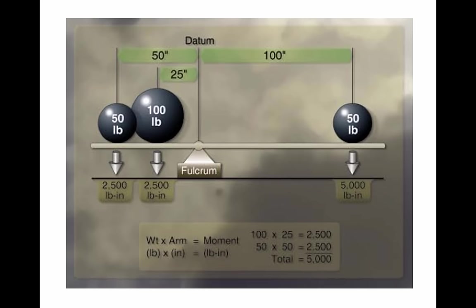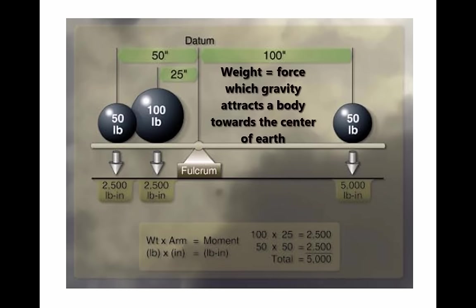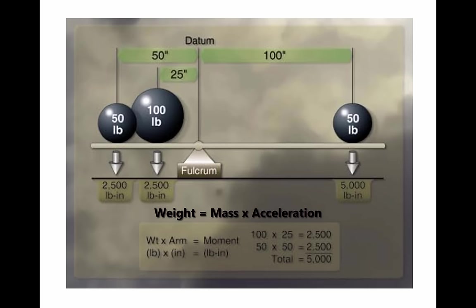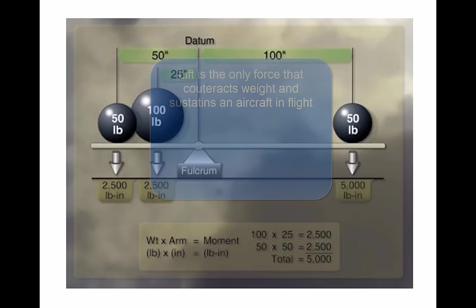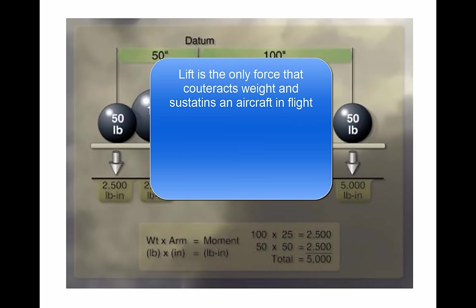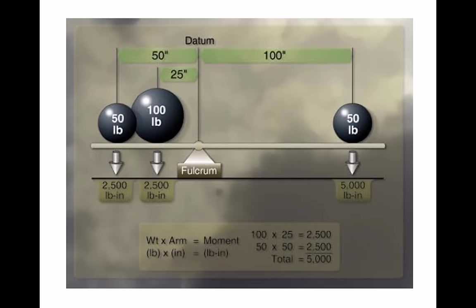As discussed in Tutorial 4, Aerodynamics of Flight, weight is the force with which gravity attracts a body toward the center of the Earth. It is a product of the mass of a body and the acceleration acting on the body. Weight is a major factor in aircraft construction and operation. The force of lift is the only force that counteracts weight and sustains an aircraft in flight. The amount of lift produced by an airfoil is limited by the airfoil design, angle of attack, airspeed, and air density. Loading an aircraft beyond the manufacturer's recommended weight must be avoided.